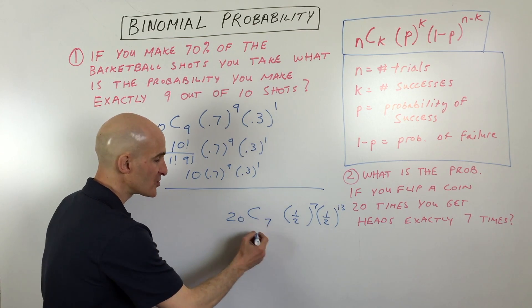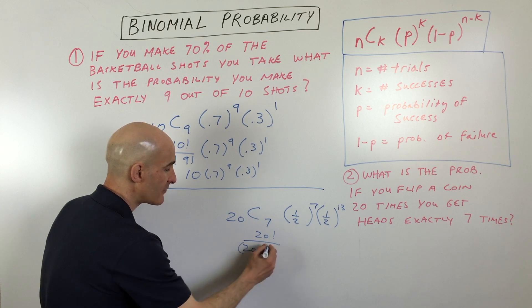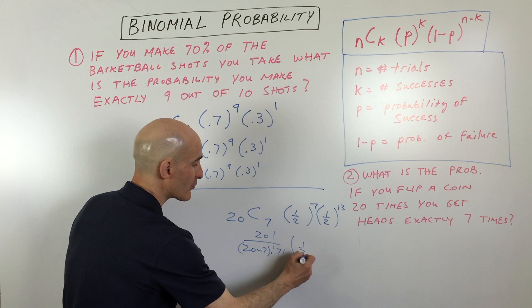But again, just with the 20 choose 7, this is 20 factorial over 20 minus 7 factorial, 7 factorial. And then you can simplify the rest of this here.